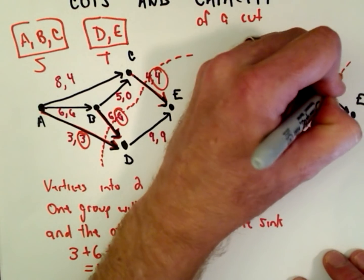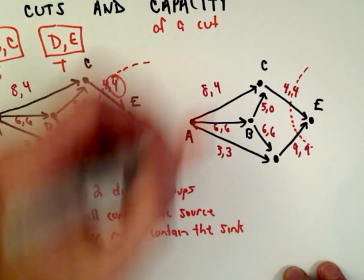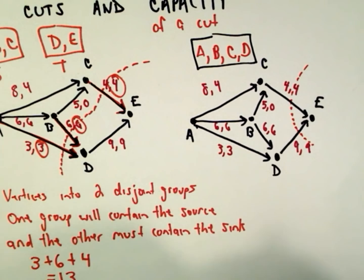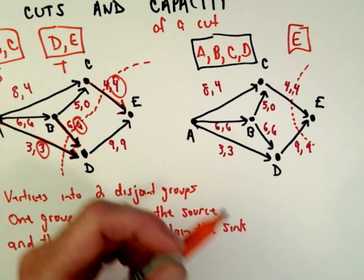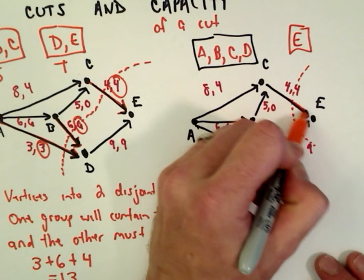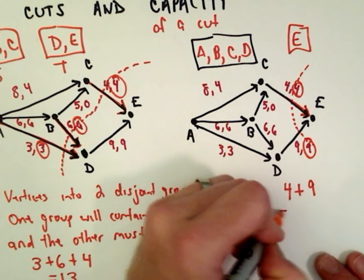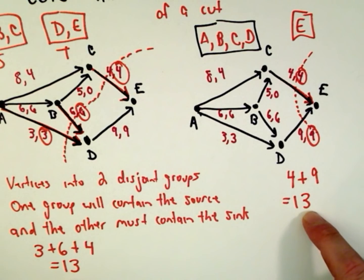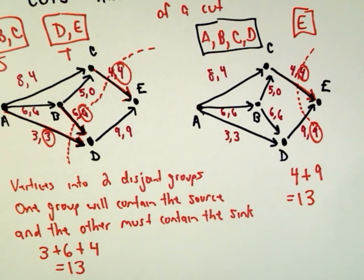For another cut, suppose I only include vertex e on one side — just the sink — and vertices a, b, c, and d on the other. The capacity here involves only two edges: from c to e with a flow of 4, and from d to e with a flow of 9, which also gives us 13. So both cuts have the same capacity — maybe cuts always give the same capacity, maybe they don't. That's something we'll address in future videos. This has just been a quick introduction to flows and cuts.